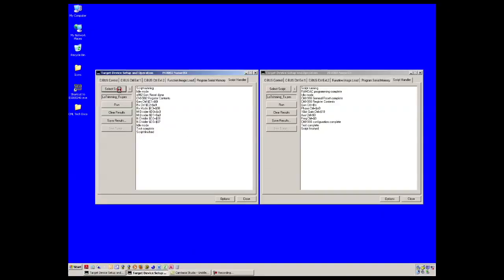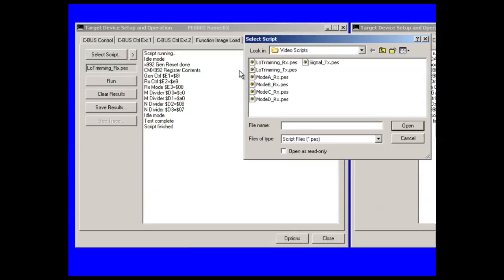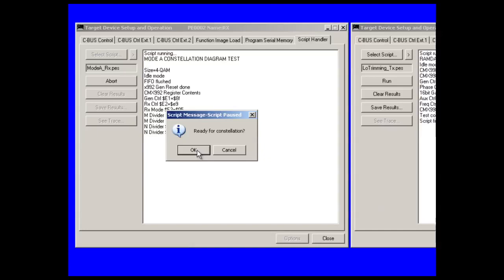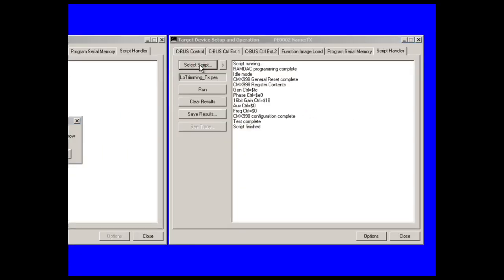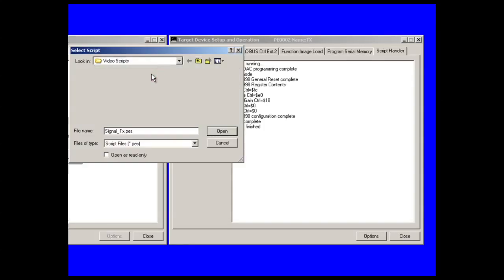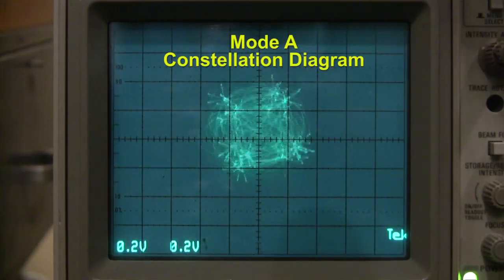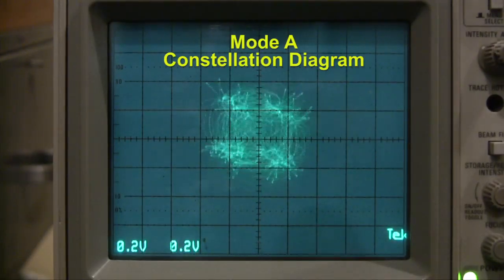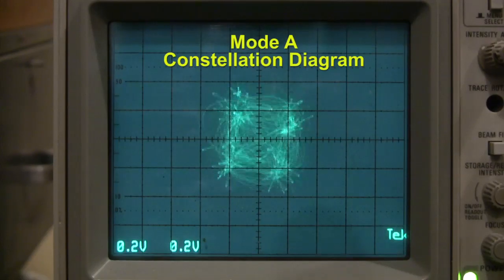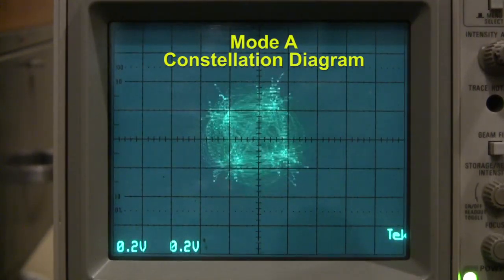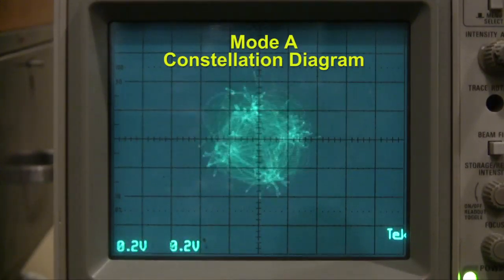Ensure your analog oscilloscope is connected to the receiving 7163 transmit outputs and then launch the mode A receive script. When prompted, launch the transmit script. You should now see a four QAM constellation diagram on your oscilloscope. The four constellation points are more like clouds than points because the modem has not synchronized on the symbol timing. The trajectories between points can overshoot due to the root raised cosine filtering, and the constellation rotates because there is still a frequency error between transmitter and receiver. When you are finished viewing the mode A image, close out the transmit and receive scripts.